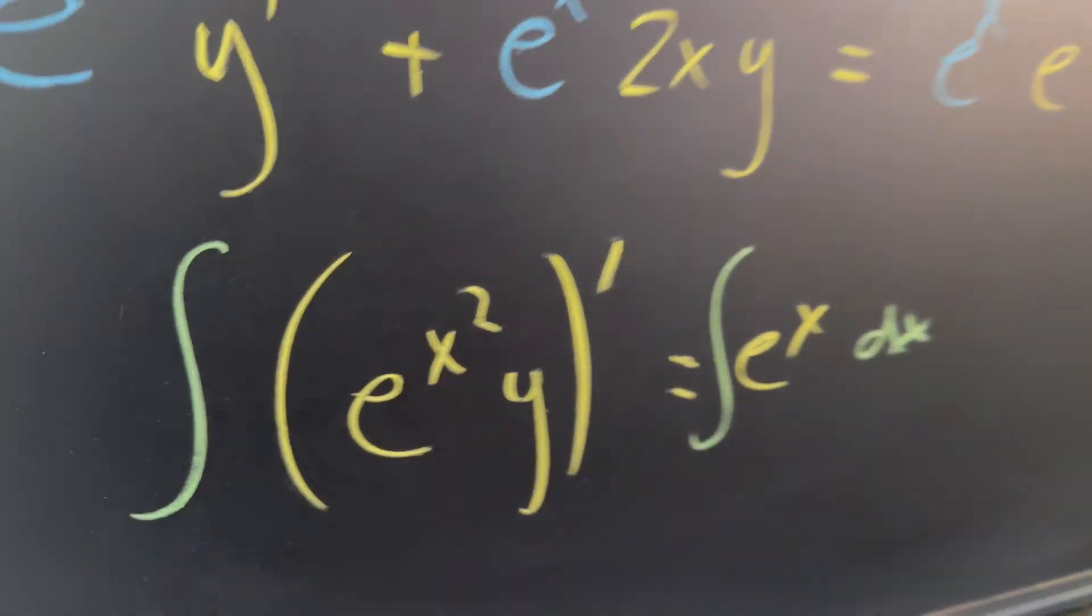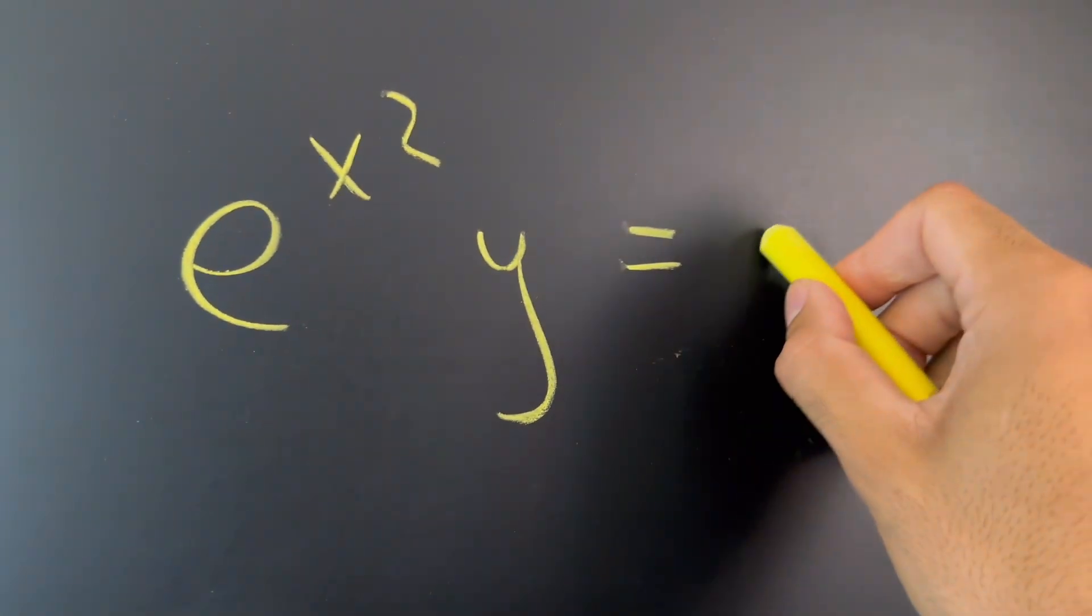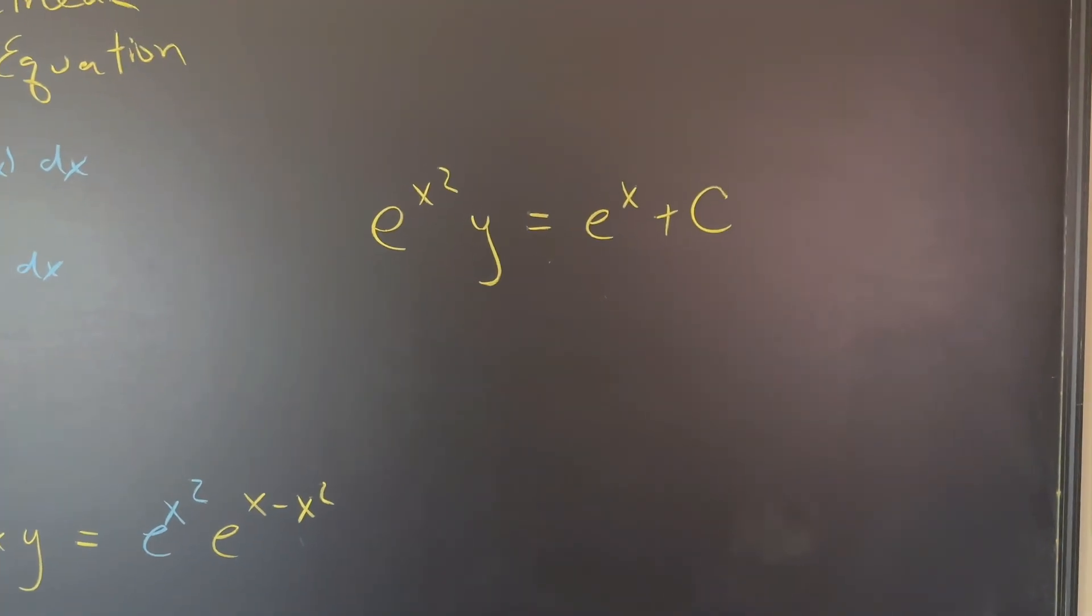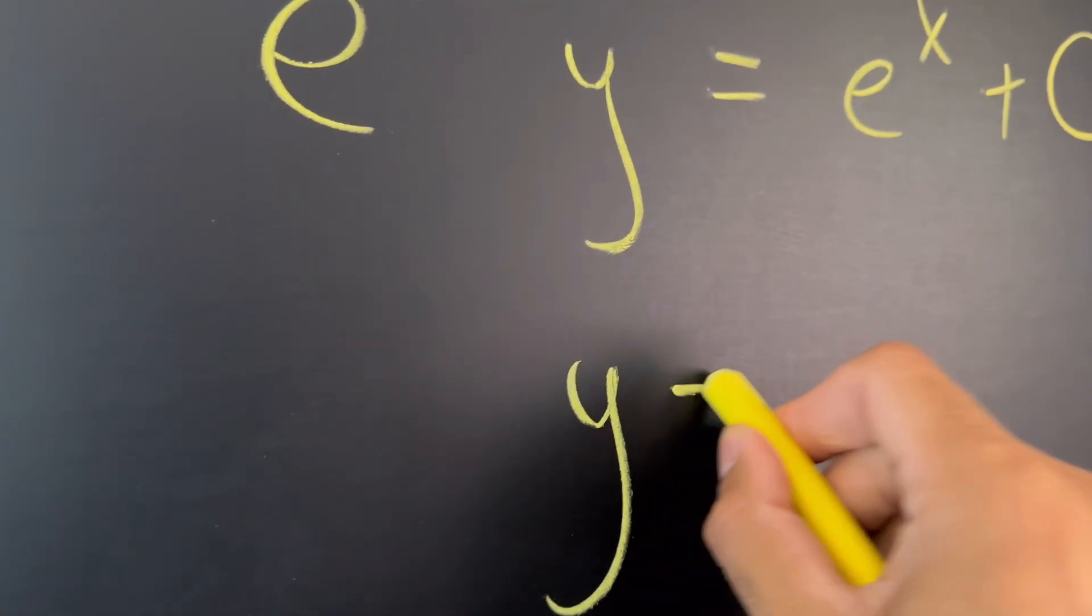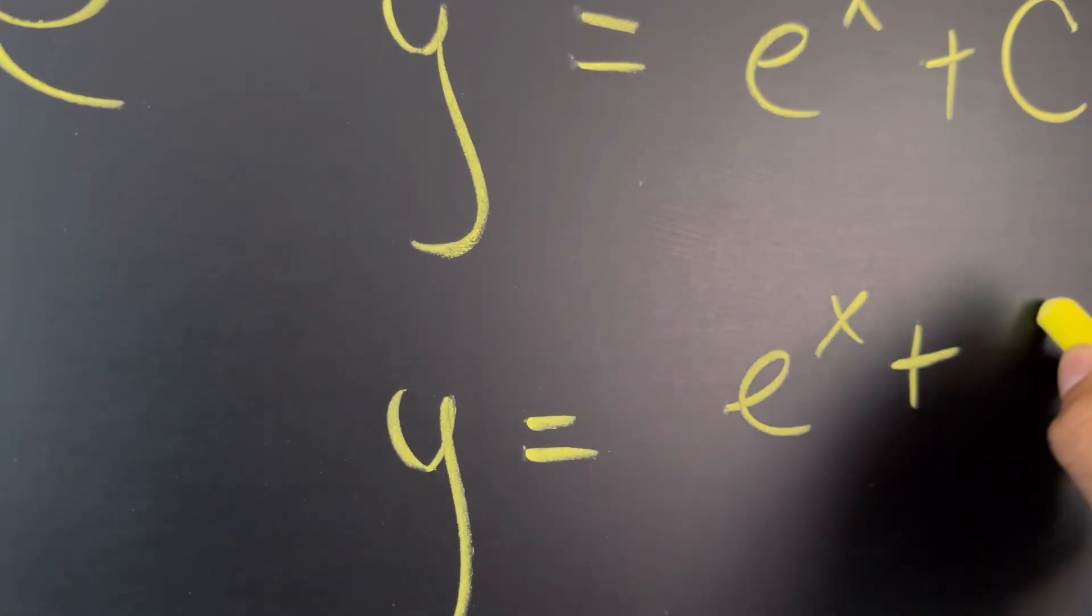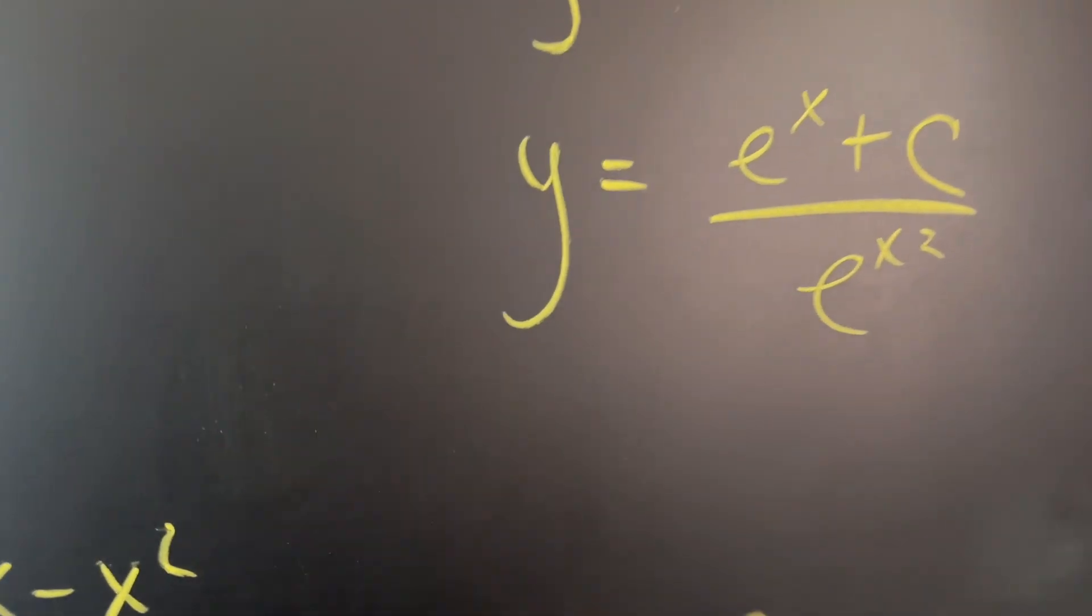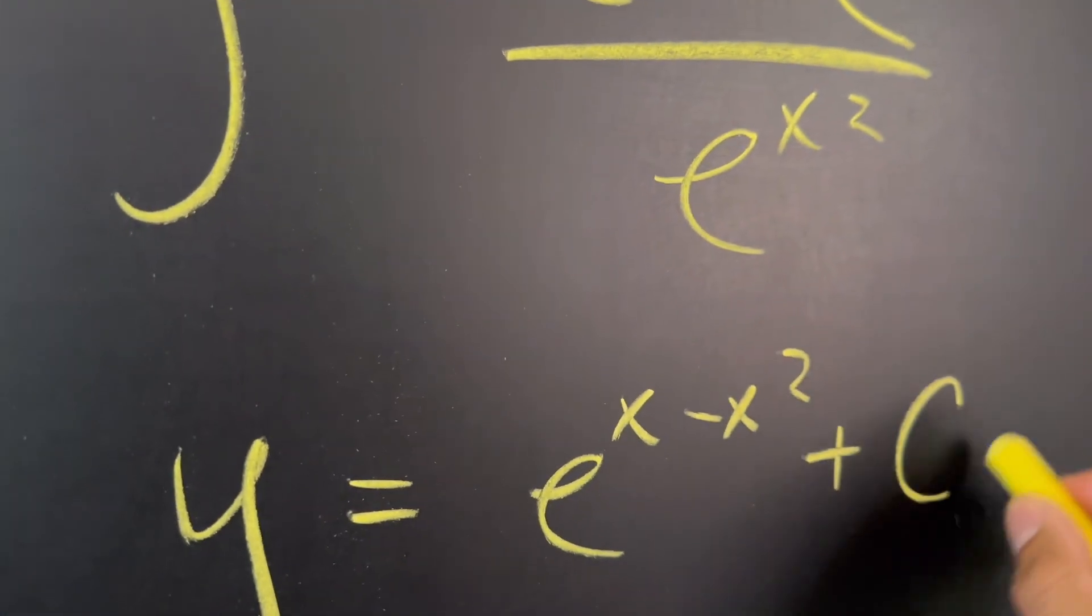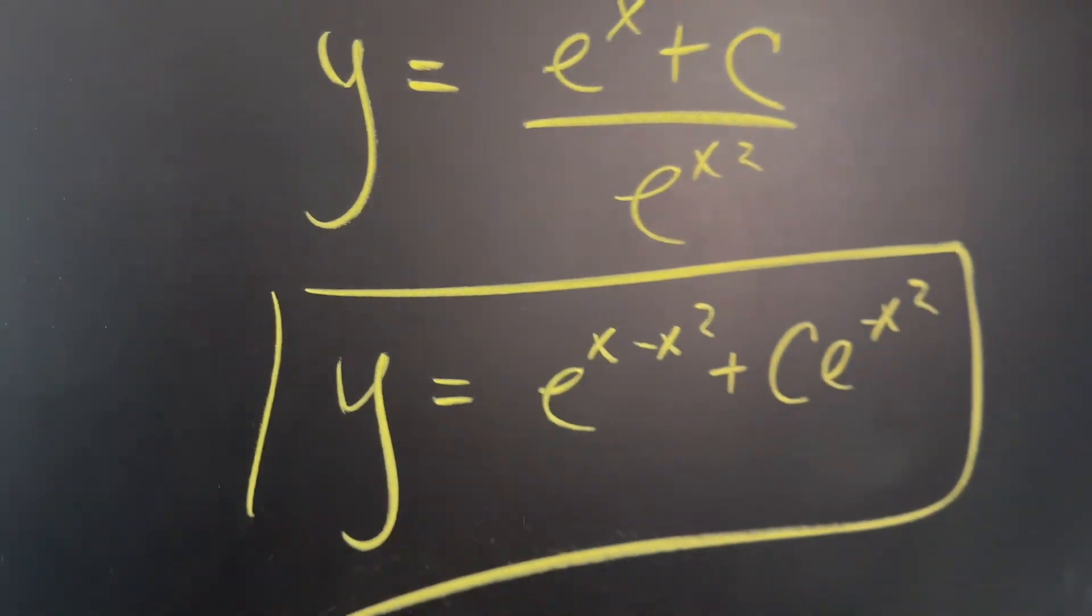So we're going to integrate both sides. That's going to be really nice because the integral of a derivative is just the original function. So that gives us e to the x squared times y equals e to the x plus c. Now all we have left to do is isolate the y variable. We're going to divide everything by e to the x squared, so we have y equals e to the x plus c over e to the x squared. You can rewrite this as y equals e to the x minus x squared plus c times e to the negative x squared. What you have now is your general solution for a differential equation.